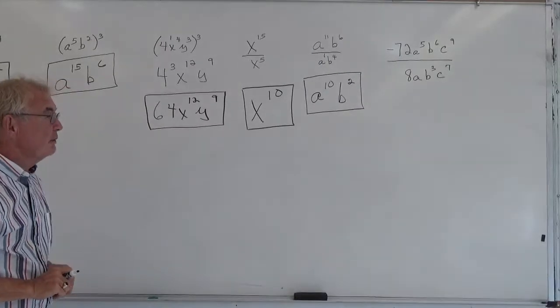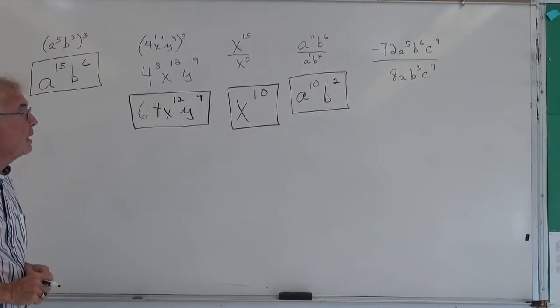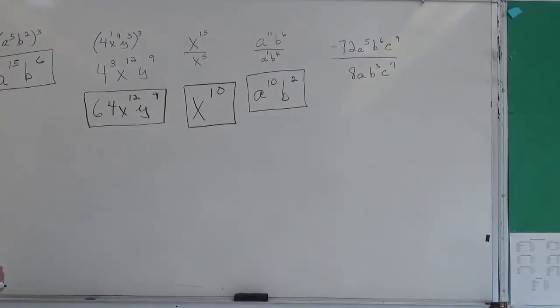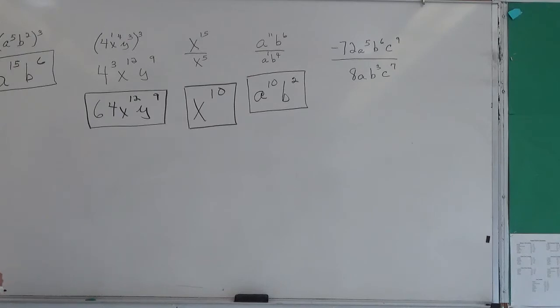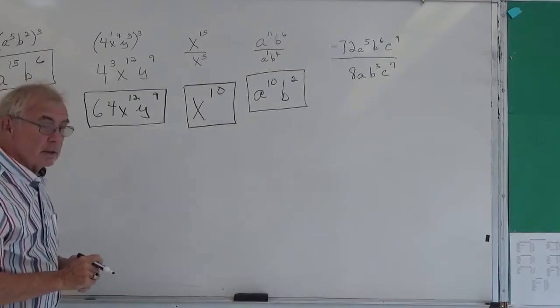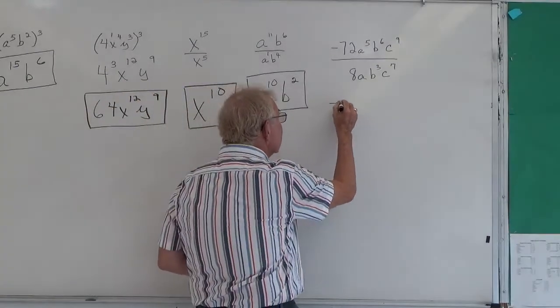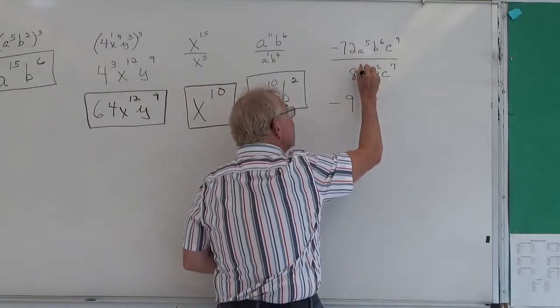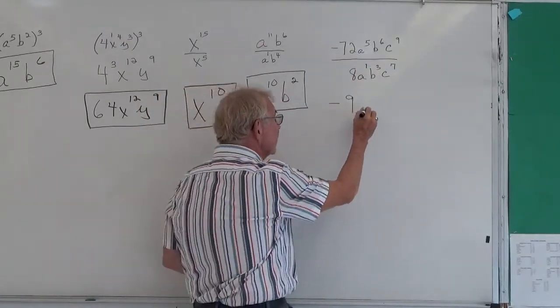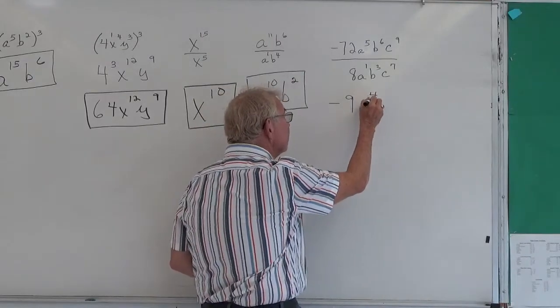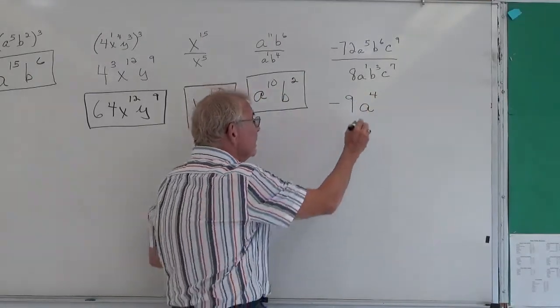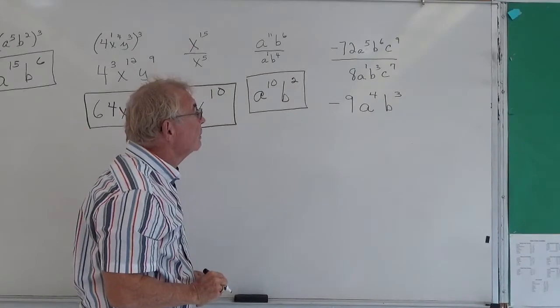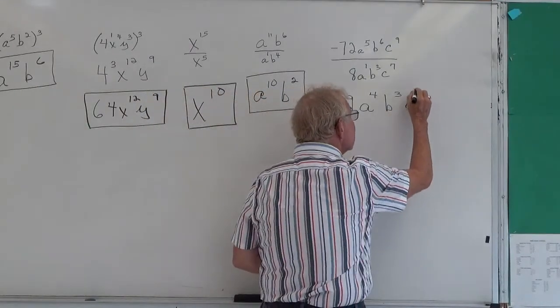And our last example, in the division, we have coefficients. So we have a negative 72 over 8. And like in the multiplication, we just divide a negative by a positive is a negative. 8 goes into 72 nine times. So that's a negative 9. Now we have three variables. So we have a 5 over a 1, so we subtract and get a 4. We have b, we subtract our exponents, 6 take away 3 is 3. And we have c, 9 take away 7 is 2.